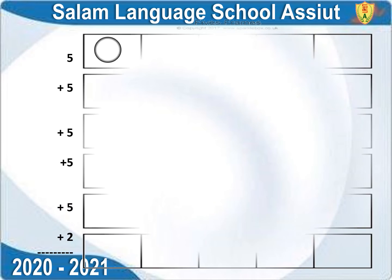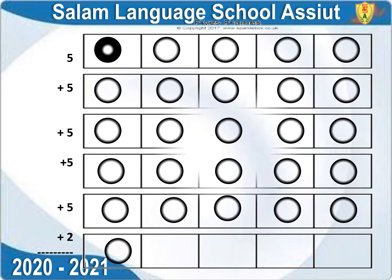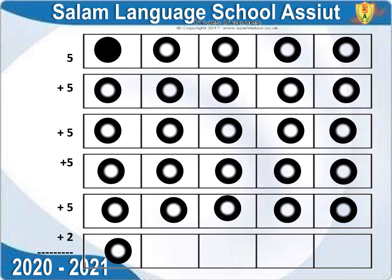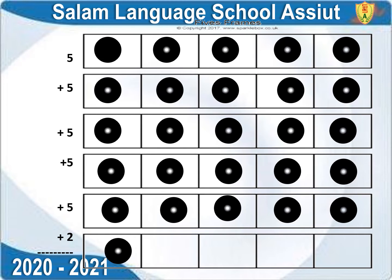It's five frame time. Today we will put a new dot to show number 27. To show number 27, we use five completely filled five frames and a new five frame to put two dots.